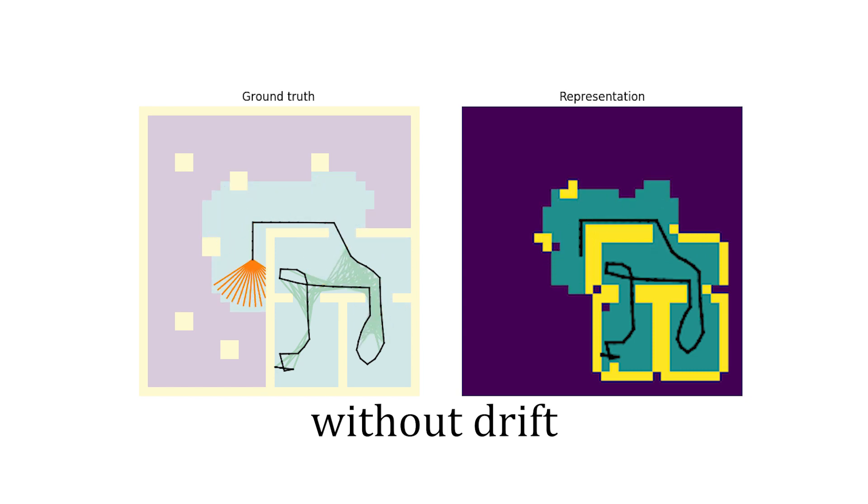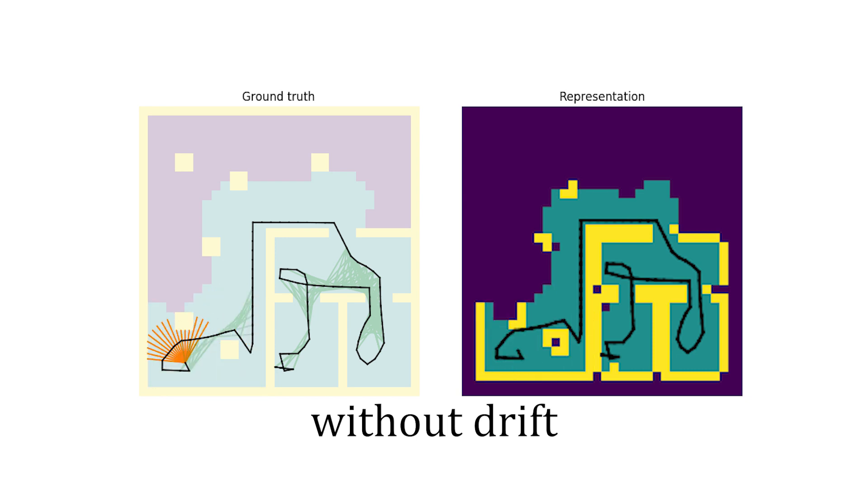In the ground truth view on the left, we see the robot represented by its depth sensor rays in orange. Here we simulate the robot being in a house surrounded by trees.